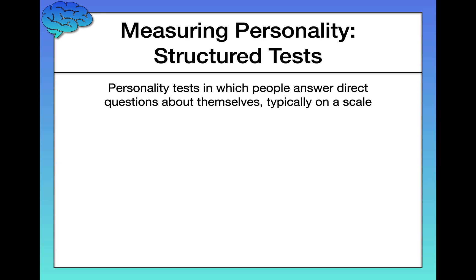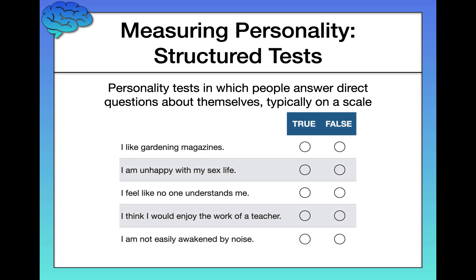Another example of a structured personality test is the MMPI and its various iterations over time, like the MMPI-2 and the MMPI-2-RF, the revised version of the MMPI-2.